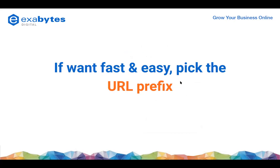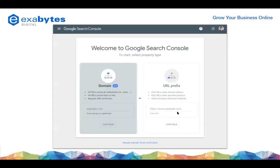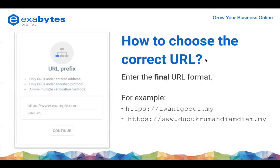The domain method was only implemented last year. The usual way is using the URL prefix. For a fast and easy setup, pick the URL prefix. Many tags also have faced issues like clients asking 'can you help me? I find no road.' So let's continue - how to choose the correct URL.